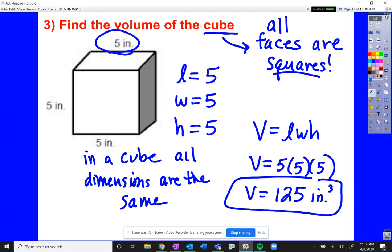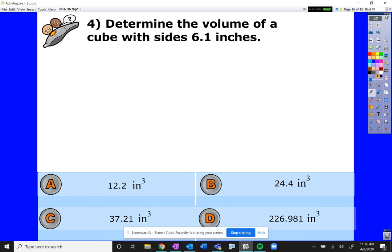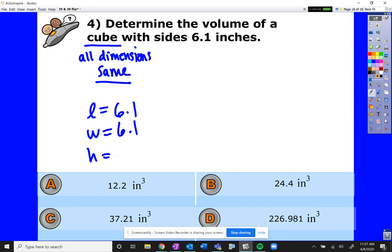Let's keep rolling here. Determine the volume of a cube with side 6.1. Again, with a cube, we know all dimensions are the same. So length is 6.1, width is 6.1, height is 6.1. You gotta love the cubes. Volume equals length times width times height. 6.1 times the width, which is 6.1, times the height, which is 6.1. Do a little calculating: 6.1 times 6.1 times 6.1 equals 226.981 units cubed.